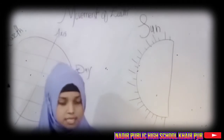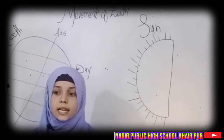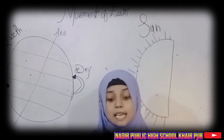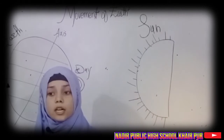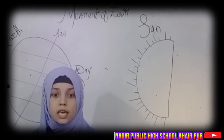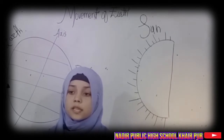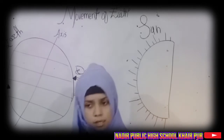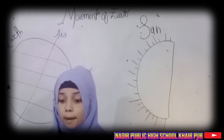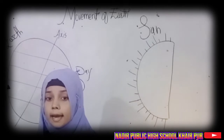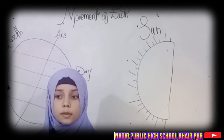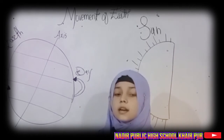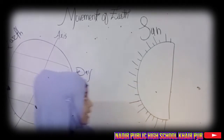The axis of the earth, which is an imaginary line, makes an angle of 66 and a half degrees on its orbital plane. The plane formed by its orbit is known as the orbital plane.